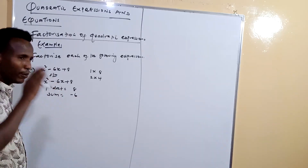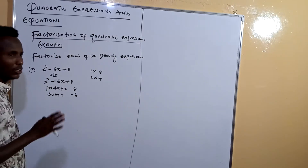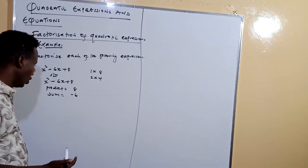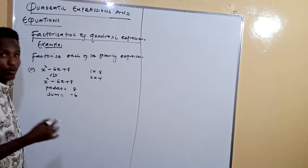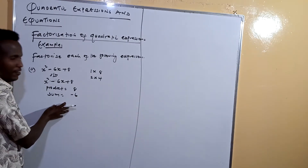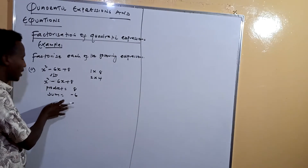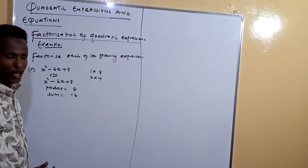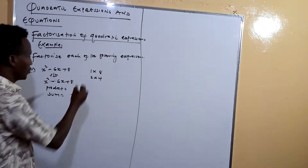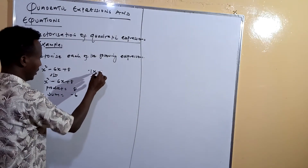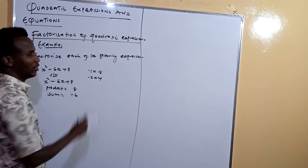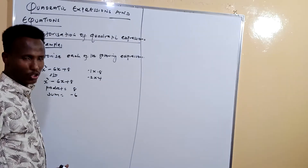When the product side is positive, the two numbers will either both be positive or both be negative. Since our sum side is negative 6, the two numbers must both be negative. So our candidates are: negative 1 and negative 8, or negative 2 and negative 4. Negative 1 times negative 8 gives positive 8 — that's correct for the product side.